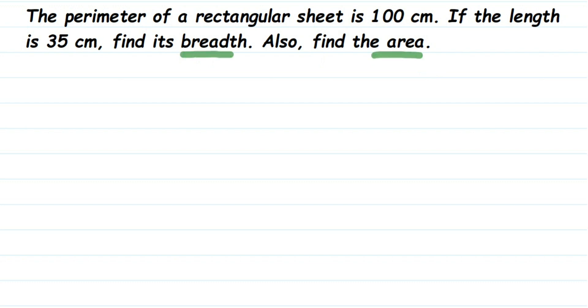They have given two things: one is perimeter which is 100 centimeters, and they have given the length. To find out the area we should know length and breadth, so we're going to first find out the breadth using what we know from the question.